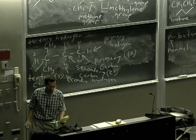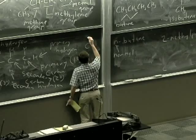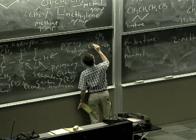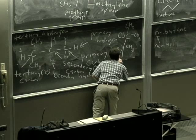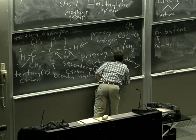Now, not exemplified in this molecule, but exemplified in neopentane is one last type of carbon for which, of course, you won't have a hydrogen. And that's a carbon with four carbons attached to it. And we refer to it as a quaternary carbon. And that's a good question.